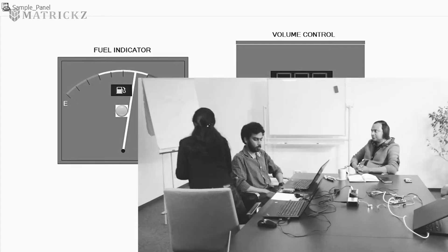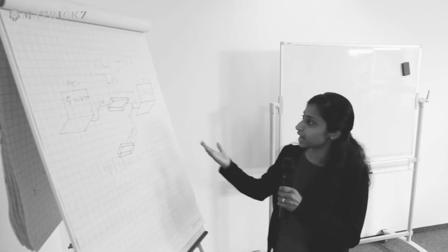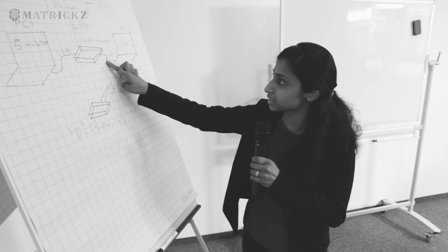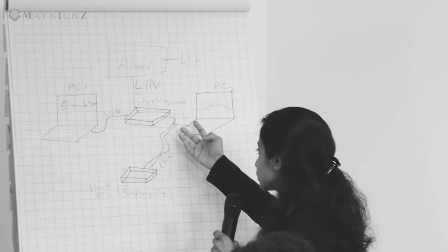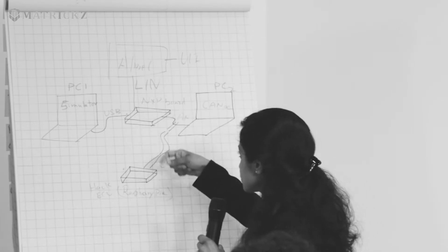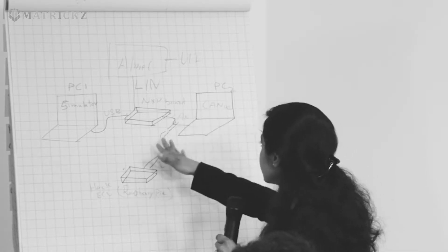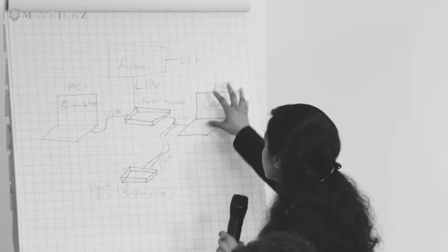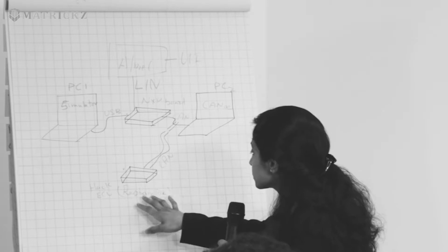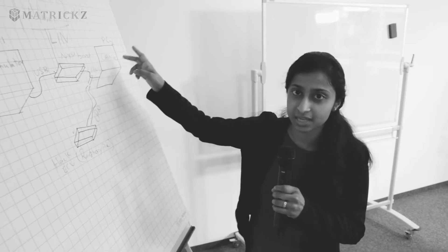To explain the block diagram simply: we have the NXP board and the Raspberry Pi connected. The Raspberry Pi acts as a CAN sniffer, checking what kind of messages are going on the CAN bus. We have CANoe used to display those CAN messages, and using the Raspberry Pi we can see how the CAN sniffer can affect these CAN messages.